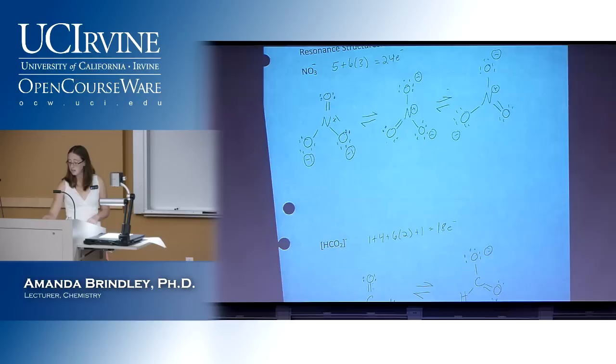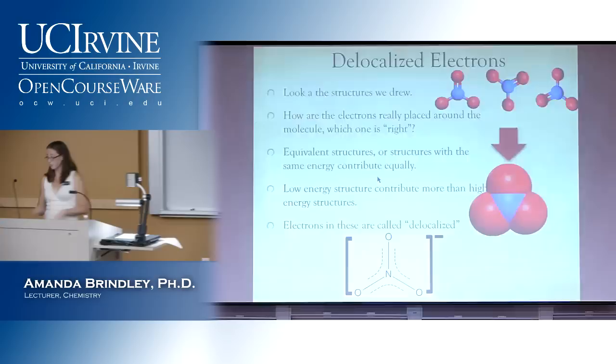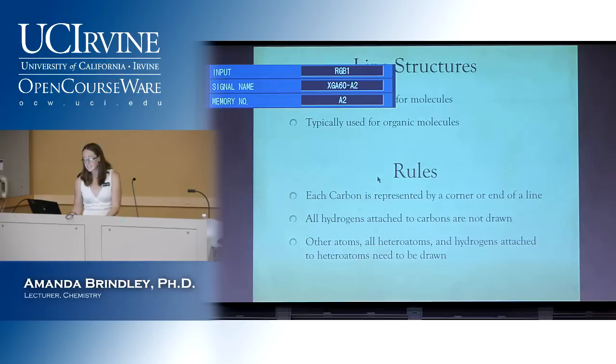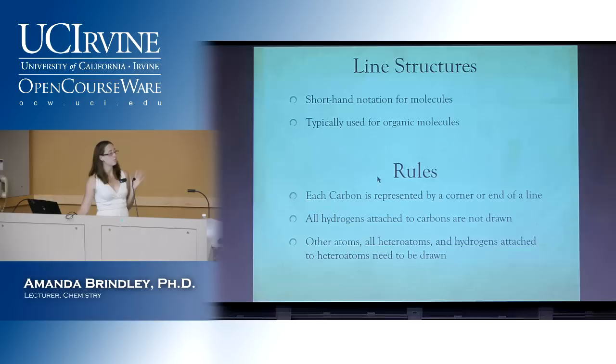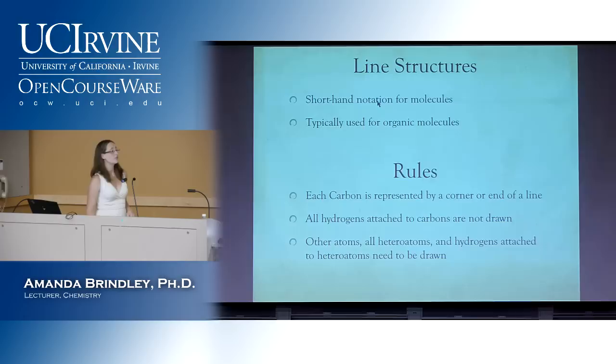Now we're going to move on to something not technically covered in this chapter of your book, but it's something people forget to teach until it's really too late and we're already using them. This comes up a lot in organic chemistry and you'll get really good at them there, but you need a little bit of an idea now so that when you see them in a book you know what's going on. So these are going to be called line structures. The only way to get good at this is to do lots of practice.